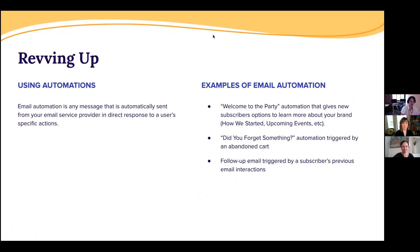Once your account is set up, you're collecting emails, and you feel you have that in control, you can start to ramp up. The next step people usually take is implementing more automations. An email automation is any message automatically sent as a direct response to a user's specific action. Examples include a 'welcome to the party' automation that gives new subscribers options to learn more about your brand — how you started, community events, etc. — as well as an abandoned cart automation and follow-up emails triggered by previous email interactions.